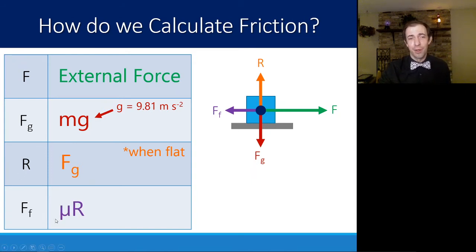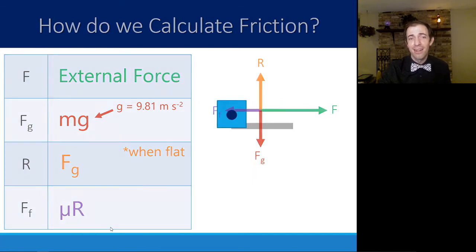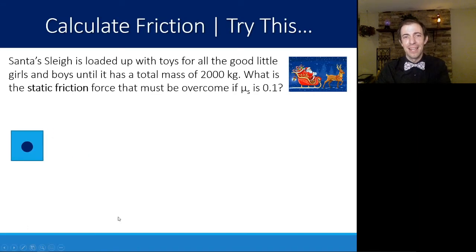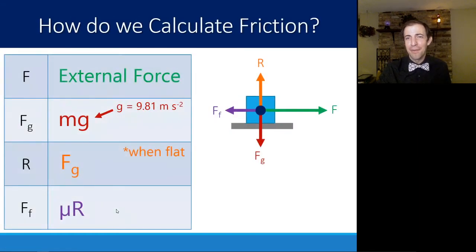The interesting thing about this is all of these steps are pretty easy, pretty small equations, but they're chained together. In order to find the force of friction, you need to know R. In order to know R, you need to know Fg. In order to know Fg, you need to know the mass. So all of these different things are dependent upon earlier small equations.